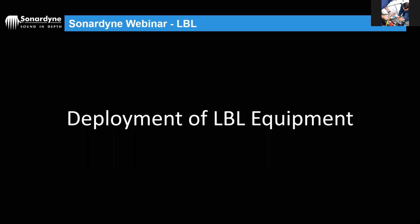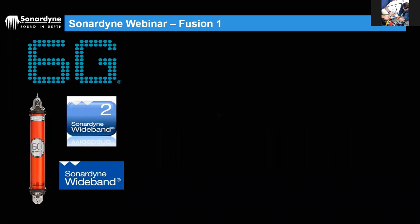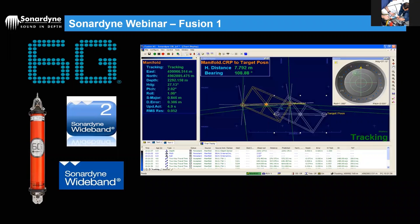That covers the overview from the first webinar. Now let's look at the hardware and software needed to set up an LBL array. There are two software systems from Sonardyne for LBL operations. The first — Fusion 6G, now semi-rebranded as Fusion One — is used in around 97–98% of LBL construction jobs offshore. It uses sixth-generation Wideband 2 and 2+ hardware and is backwards compatible with Wideband One systems.